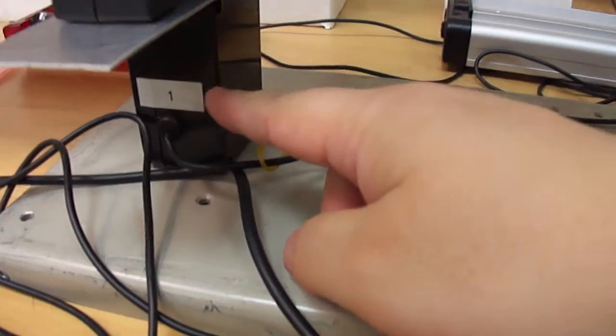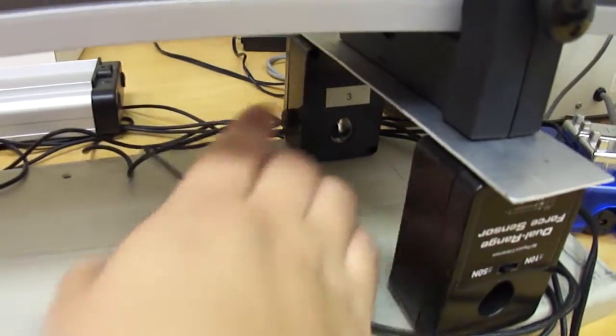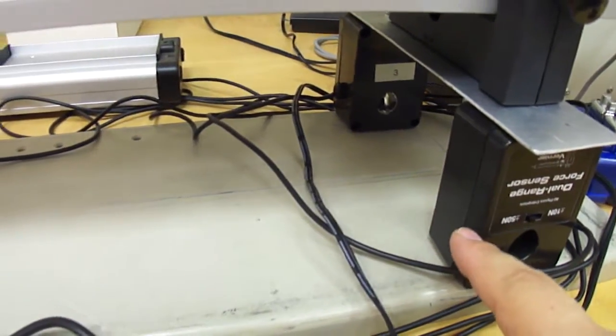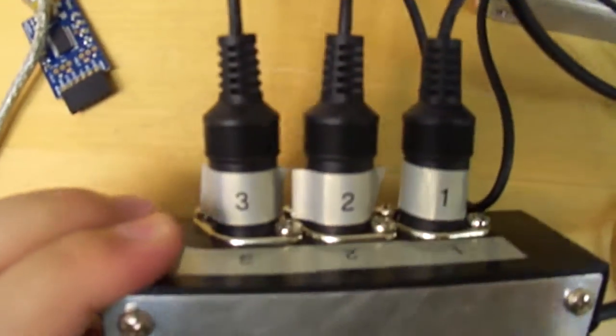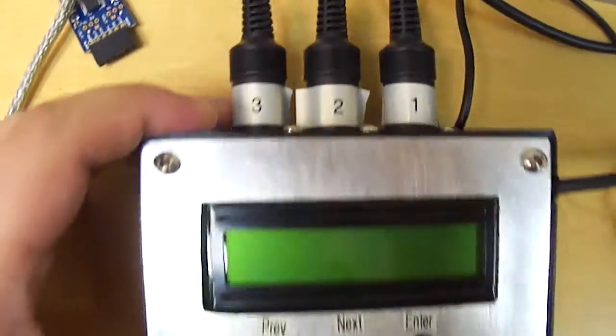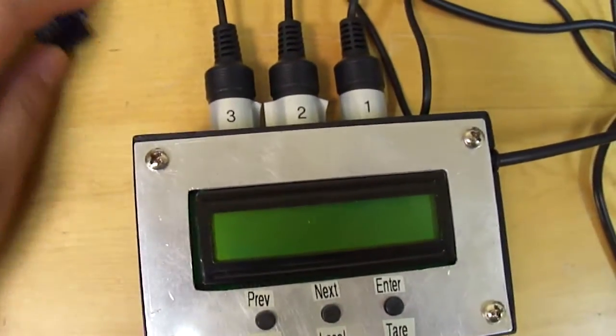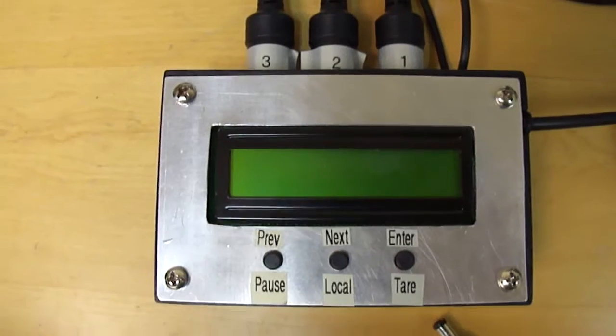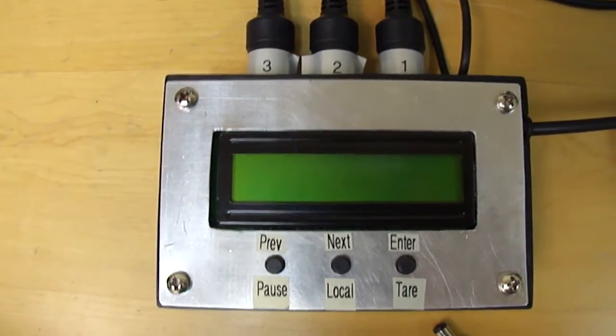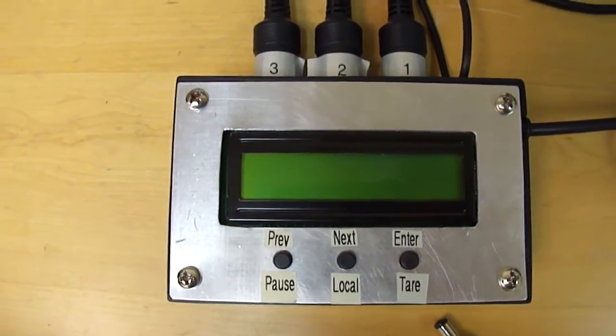And these are the three Vernier force gauges. One, this is three, and this one is two. And the gauges are all connected here with numbers one, two, three on this box that I designed. I'm calling it the open source physics laboratory hardware.